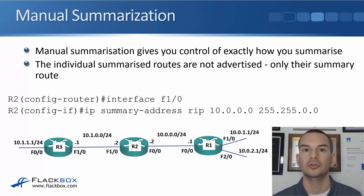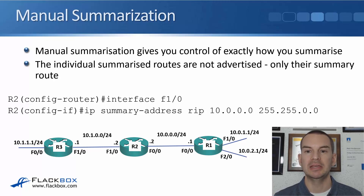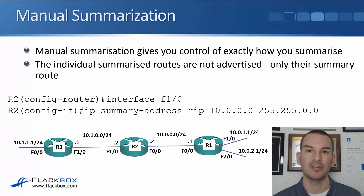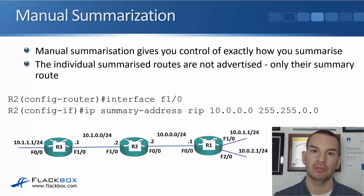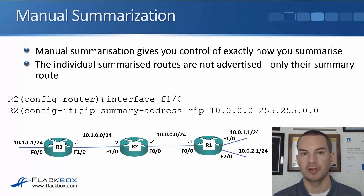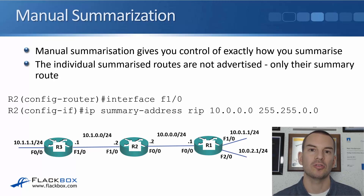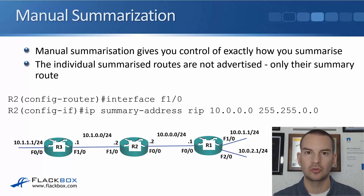We don't want automatic summarization, but we probably still want to do summarization manually. To do that, the command is 'ip summary-address'. This gives us control of exactly how we are summarizing. When we do this, the individual summarized routes within the larger range are not advertised — only the summary route. So the neighbor router only learns the summary route rather than all individual routes, making it more efficient, taking less memory, and compartmentalizing different parts of your network.